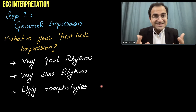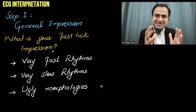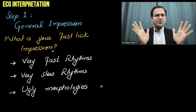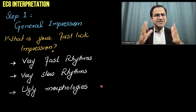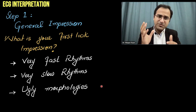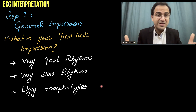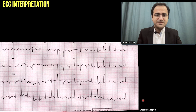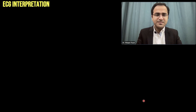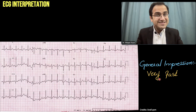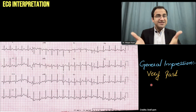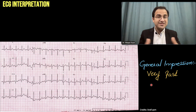I will show you some ECGs for 3-4 seconds and you have to take a general impression from each. You do not need to calculate rates, rhythms, or anything — you just get a general impression of whether it is a fast rhythm, a slow rhythm, or there are ugly morphologies. Looking at the first ECG: your general impression should be that it is a very fast ECG — the rate is very rapid, the rate is very high.